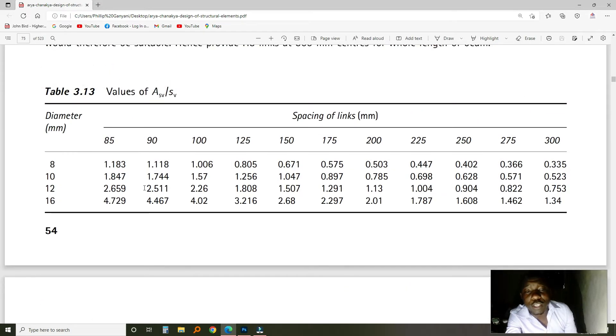So, the number that you come up with from that table, you will find it in this table here. So, let's say it was 0.6. If you look at it from this table, you will find out this number is slightly greater than 0.6. This is less. So, you'll be forced to use this one. So, you'll be using links of a diameter of 10 spaced at 250. If your value is this one.